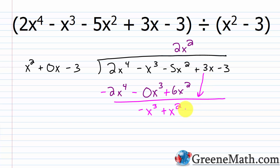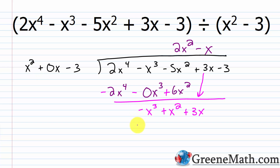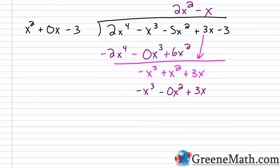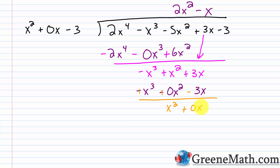Bring down 3x. Leading term into leading term: negative x cubed over x squared — x squared cancels two factors of x from the numerator, leaving negative x to the first power. So minus x. Multiply: negative x times x squared is negative x cubed, negative x times 0x is minus 0x squared, and negative x times negative 3 is positive 3x. Changing signs: negative x cubed plus x cubed is 0, x squared plus 0x squared is x squared, and 3x minus 3x gives plus 0x. Bring down negative 3.